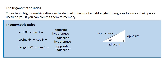It's worth remembering these ratios. You can refer back to these notes at any time, but it will speed you up a lot in your calculations if you can remember that sine equals opposite over hypotenuse, cosine equals adjacent over hypotenuse, and tan equals opposite over adjacent.